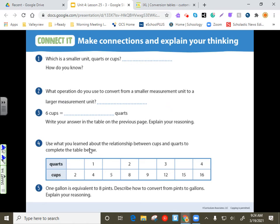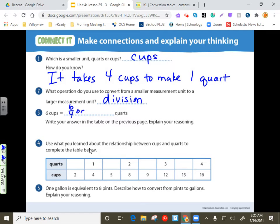Let's look at the notes on the next page, which is a smaller unit, quarts or cups. We know that cups are, even from that picture in the very beginning, we needed four of those cups to do that. In fact, let's write that down. It takes four cups to make one quart. That's how we know what operation you use to convert from a smaller measurement unit into a larger measurement. That's division. And six cups equals, that equals six fourths or one and two fourths or one and a half. All three of those have equal value. They're just stated differently.